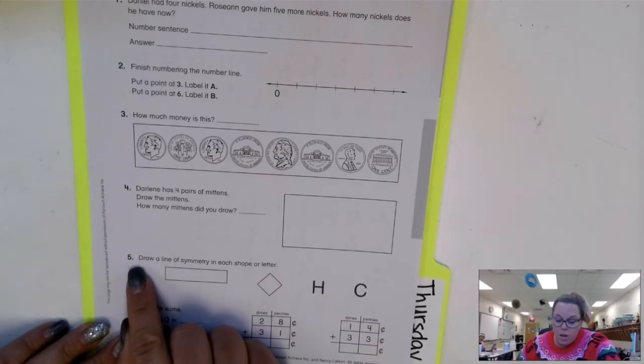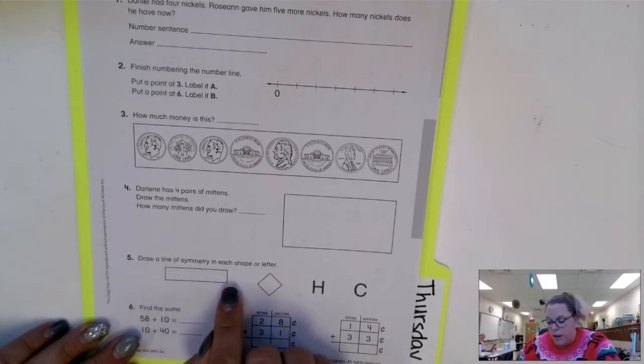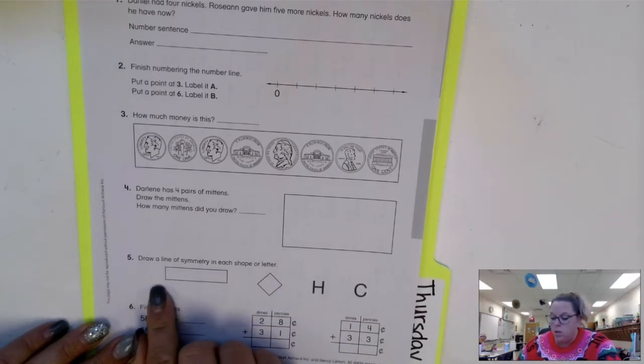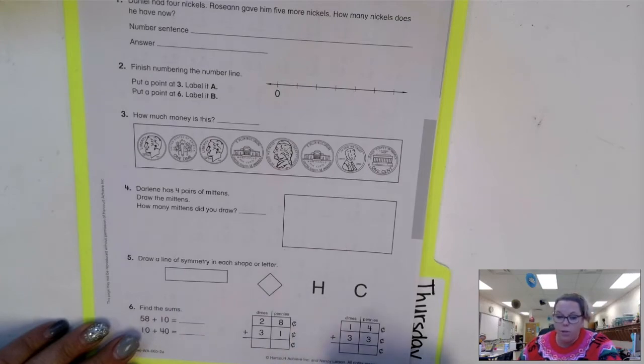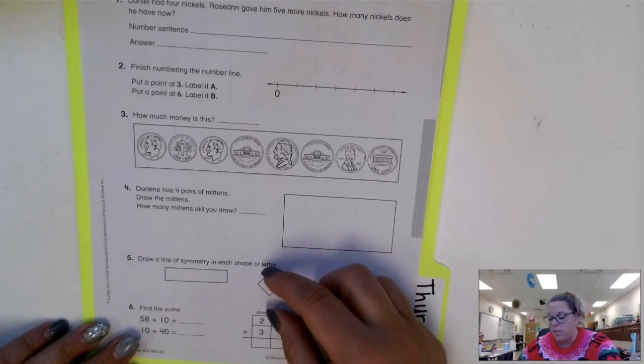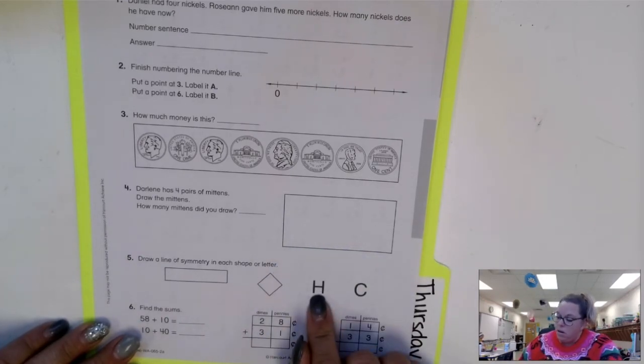Number five. Draw a line of symmetry in each shape or letter. So find your line of symmetry in the long rectangle. Find one in your diamond, which is actually a square if you would just turn it a little bit. Put your line of symmetry in your H and your C.